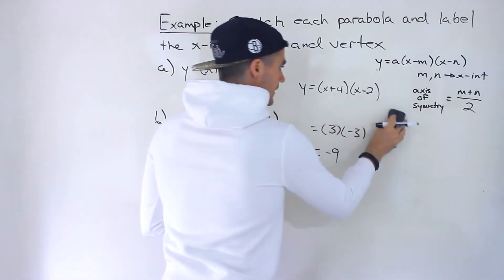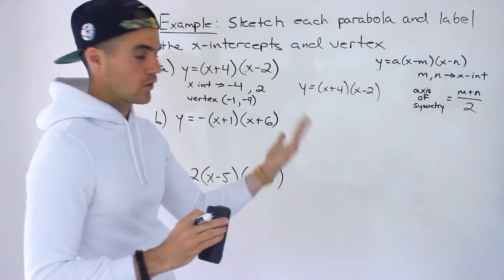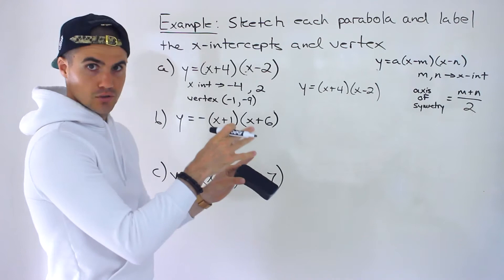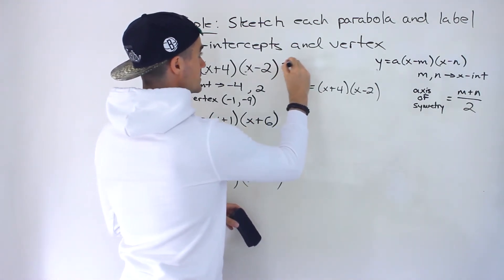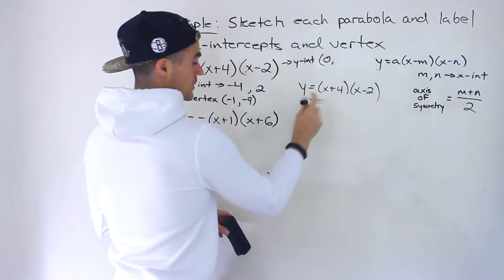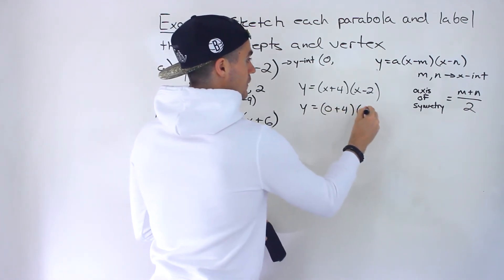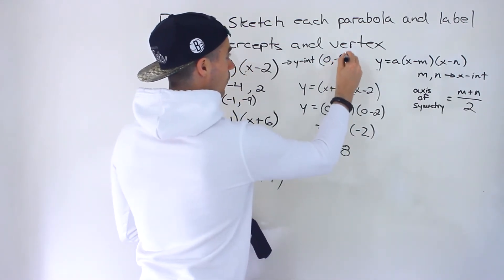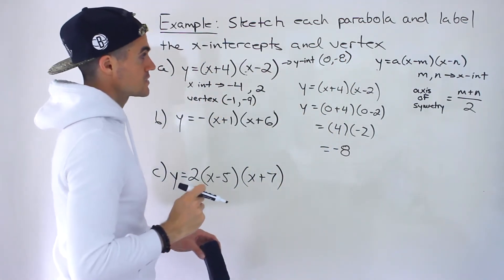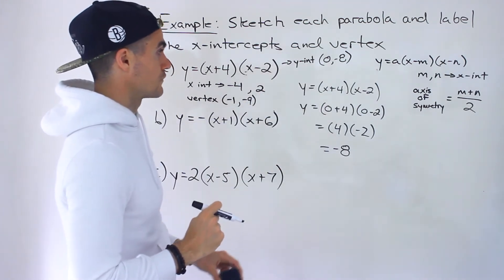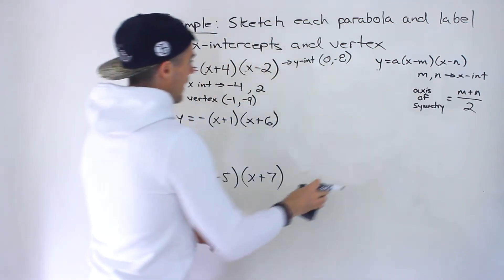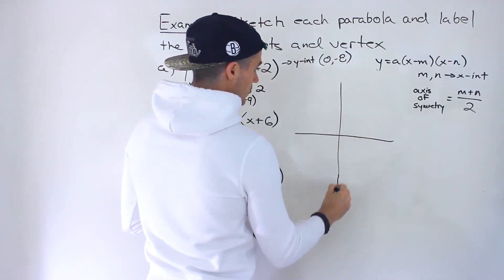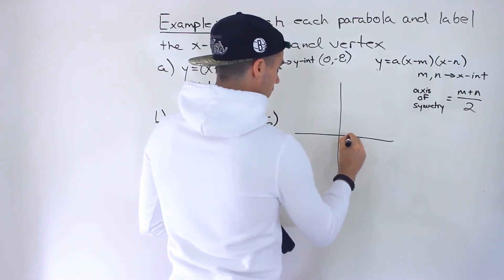Another point that's fairly easy to get, which adds more detail to the graph, is the y-intercept. For an x-intercept the y-value is always 0; for a y-intercept, the x-value is always 0. Plugging in 0 for x gives us 4 times negative 2, which gives us negative 8. So we have a y-intercept of negative 8. Now we have enough points to make a graph.